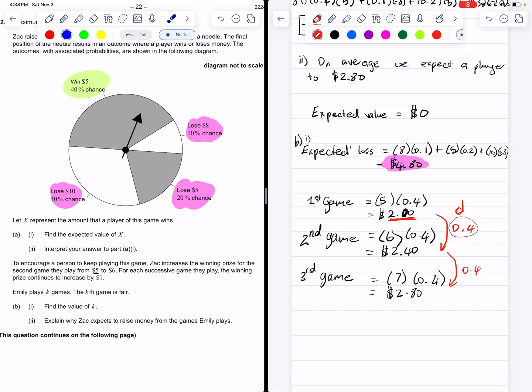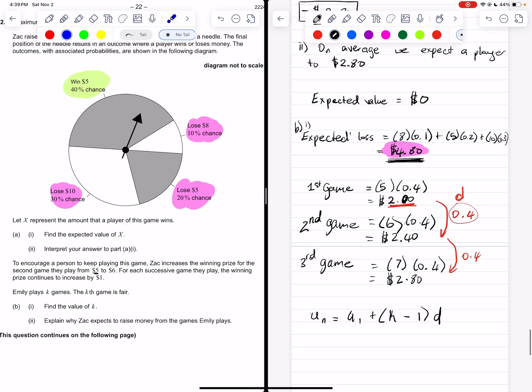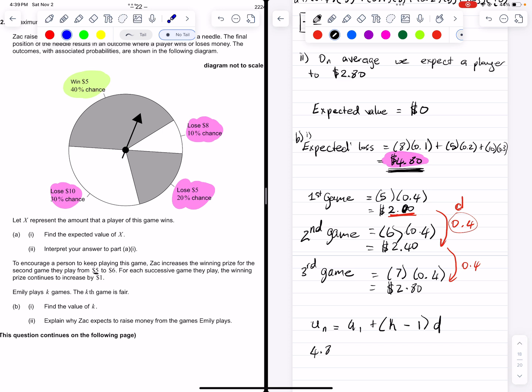So we want to have an expected winning of $4.80 that we have right here. So we are going to use our arithmetic sequence formula. Un equals u1 plus n minus 1d, but we want to know what the number of games is, and they said that it should be k. So k minus 1 times d. So our un value, the amount that we need to get up to, is $4.80. So $4.80 is equal to $2, so that's that starting amount that we had here, plus k minus 1, times that common difference, which we found to be 0.4.